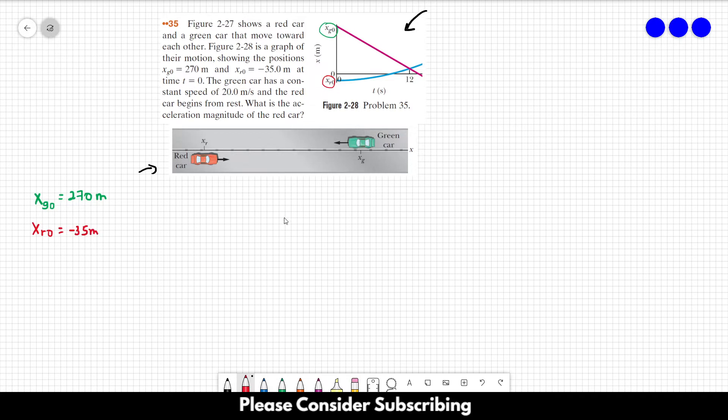The green card has a constant speed of 20 meters per second. So the initial speed of the green card, which is also its final speed, is equal to 20 meters per second.